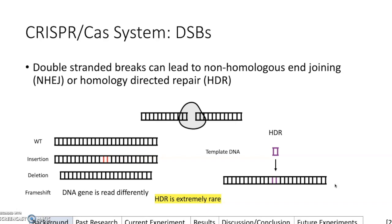For non-homologous end joining, shown on the left, there are four different outcomes that can happen after a double-stranded break. You can have wild-type, where the two DNA ends are simply joined back together as if nothing happened. You could also have an insertion or deletion — also called indels — where an insertion adds nucleotides making the DNA longer, or a deletion makes it shorter. Finally, you could have a frameshift mutation, where the reading frame of the gene is shifted, since DNA is read in triplet codons, changing how the gene is interpreted.